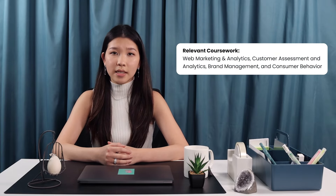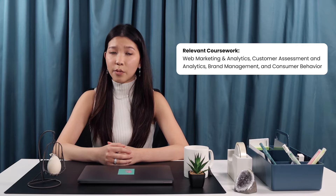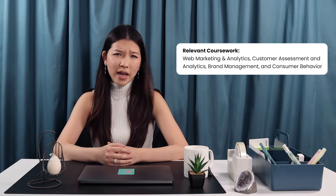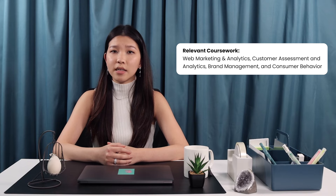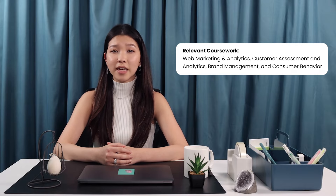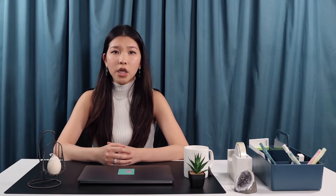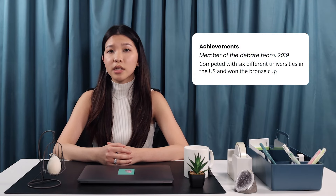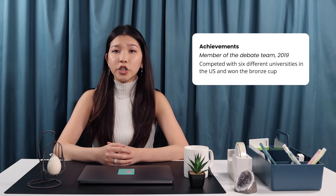Underneath your GPA, start a coursework or courses section. Keep in mind that this doesn't mean listing down math class if you're applying to be a journalist. You should only choose relevant classes such as news writing or video editing. A major's name such as business does not come close to encompassing all of the interesting topics and projects you've covered as a student. Note down projects, class scores, debate topics and any events you've hosted.